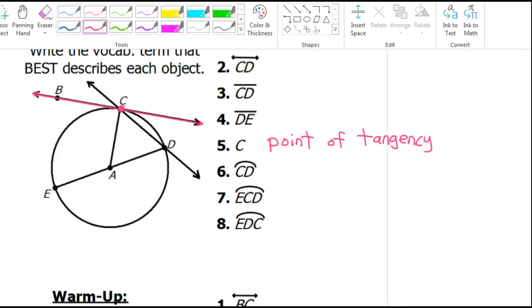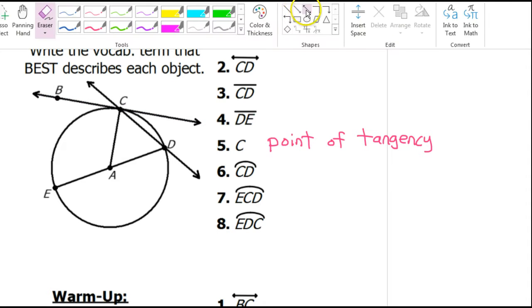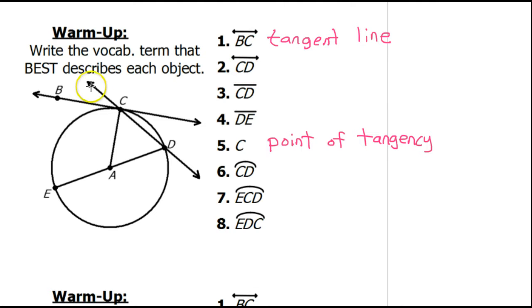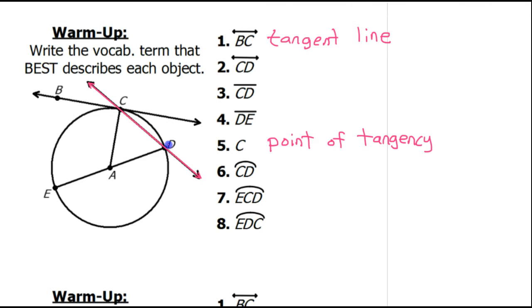Now, compare this to line CD. Line BC just touches the circle at one point. But on the other hand, line CD cuts through the interior of the circle like this. So that is called a secant line. When it cuts through the interior of the circle, that is a secant line.